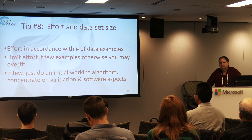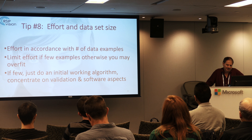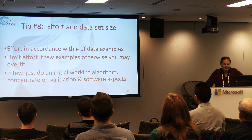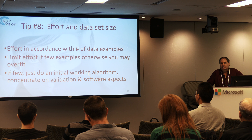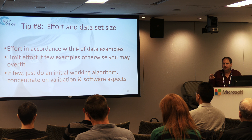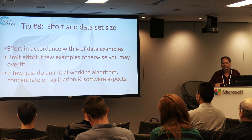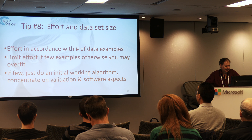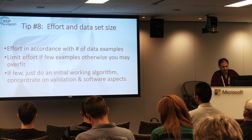Tip number eight: effort and dataset size. Sometimes you start a project with only 10 examples, and the hardware engineer tells you the future images will be much better. Remember that you have to limit the effort if you have few examples — otherwise you may cause overfitting. If you have 90% success with only 20 images and are trying to fight for 2 more correct images, that is not the way to build robust software. Use that time to do other things in the system — maybe other tasks important for the next stages. If you have very limited data examples, don't invest too much at the algorithmic level: only what is needed.